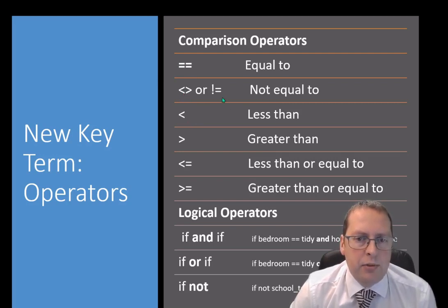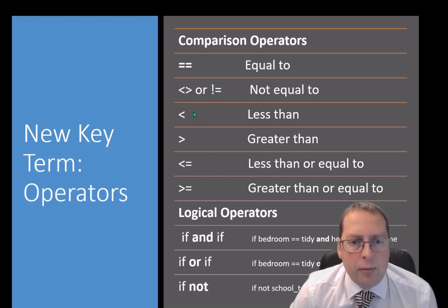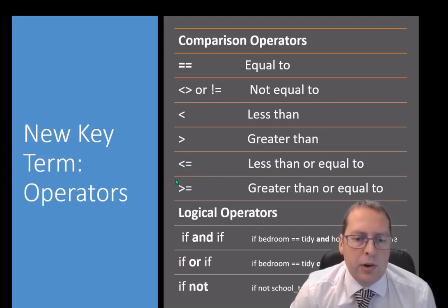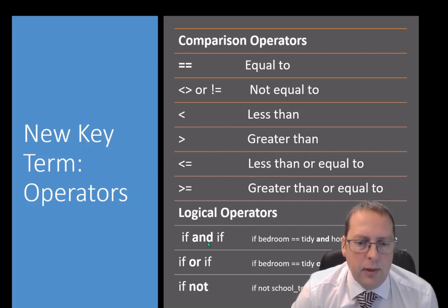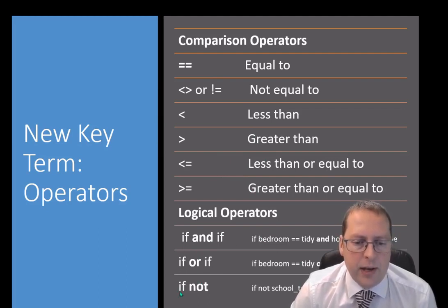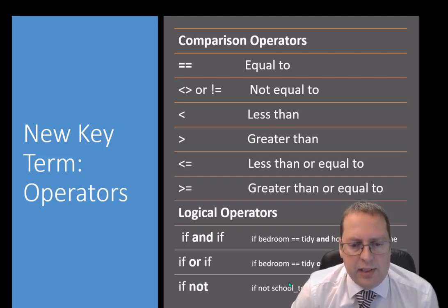The not-equal-to symbol — there are two ways to write it: less-than followed by greater-than, or exclamation-mark equals — both mean not equal to. We also have less than, greater than, less than or equal to, and greater than or equal to. You'll need to know these mathematical operators, and we'll also look at logical operators: if and, if or, and if not.